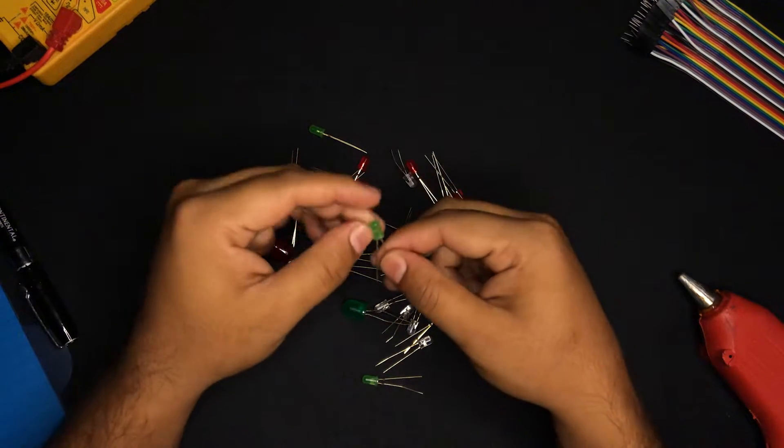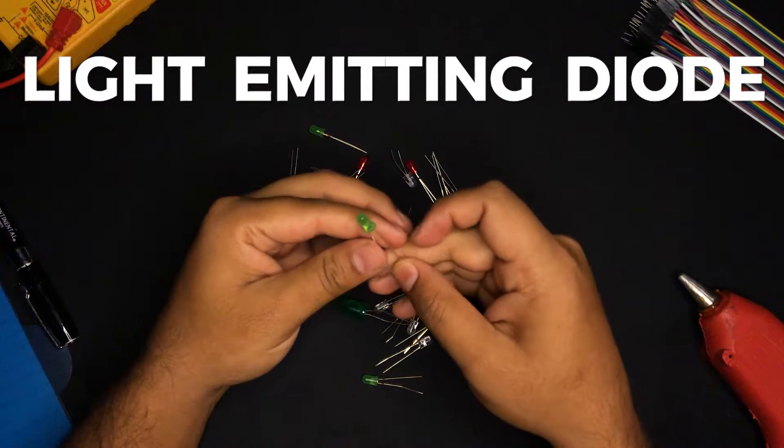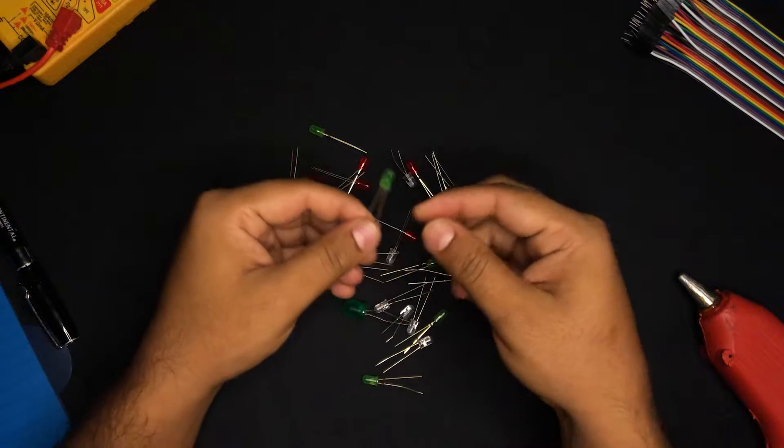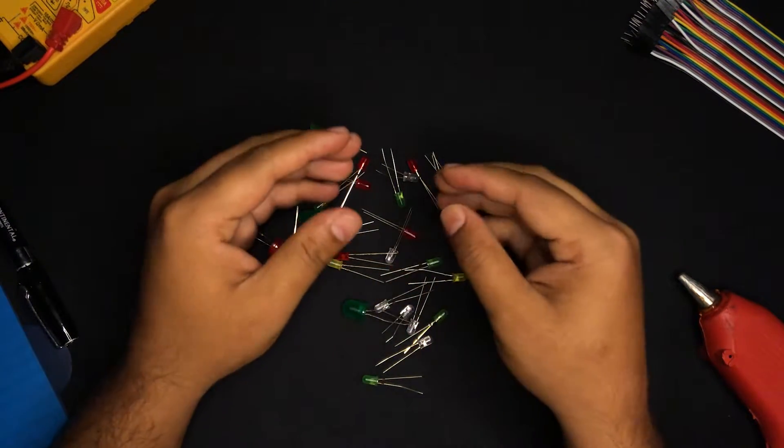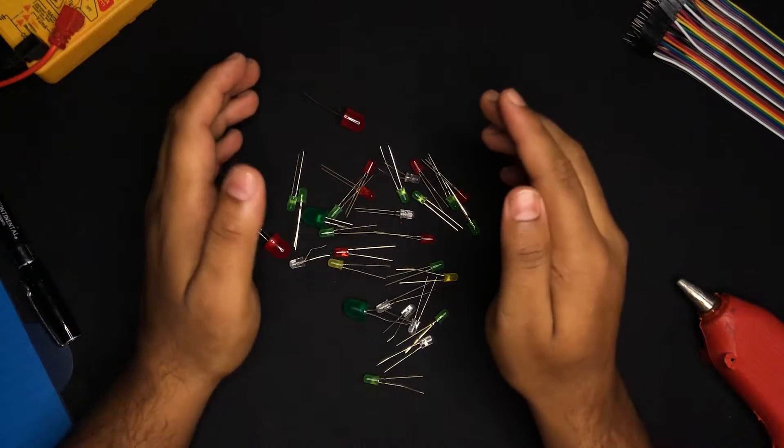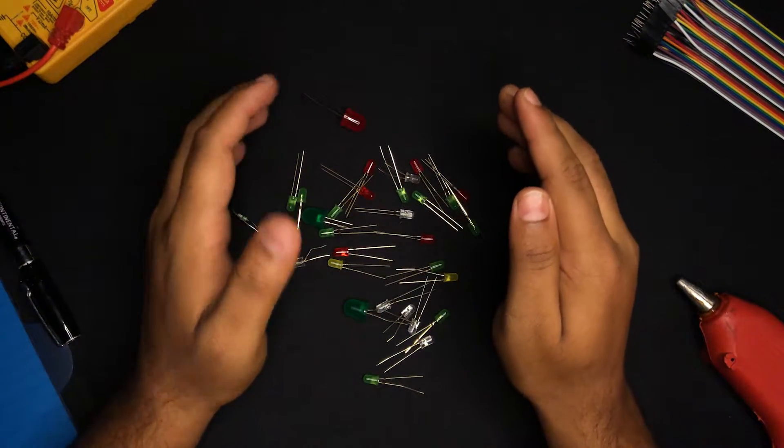LED stands for Light Emitting Diode. Now, what is a diode? A diode is basically an electrical component that allows current to flow only in one direction. The light bulbs that we usually use in our homes convert electrical energy into heat energy, and that heat energy is further converted into light energy. That is very inefficient.